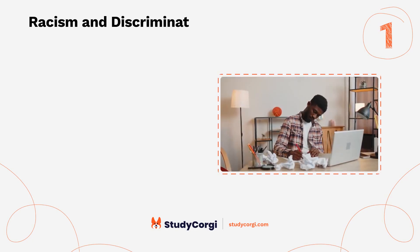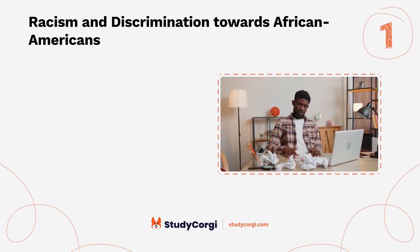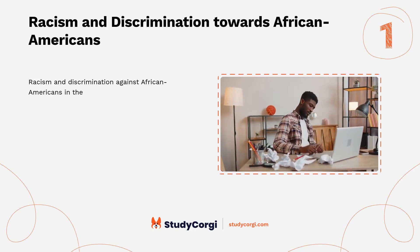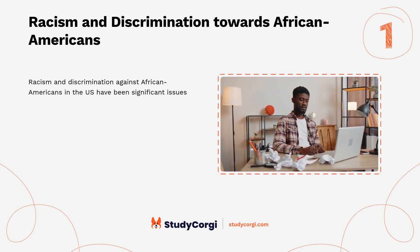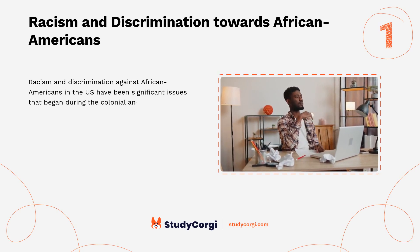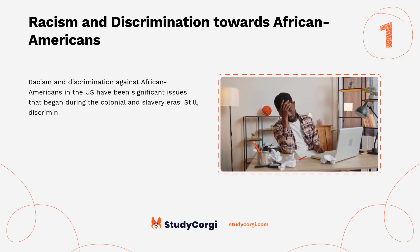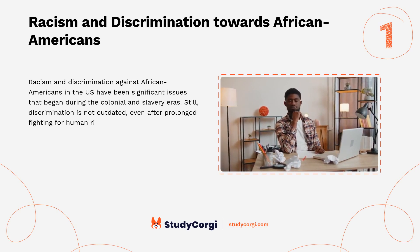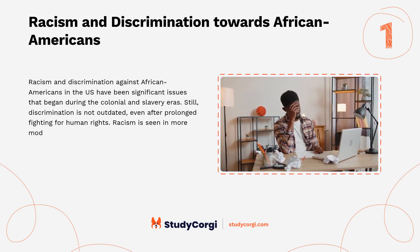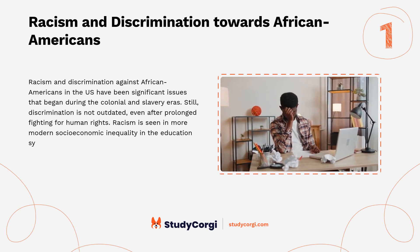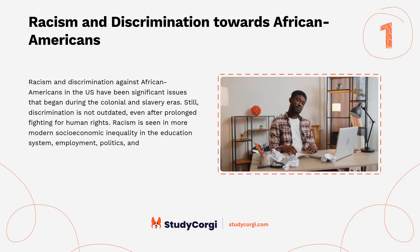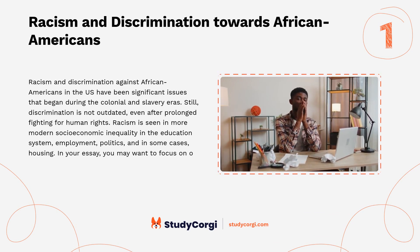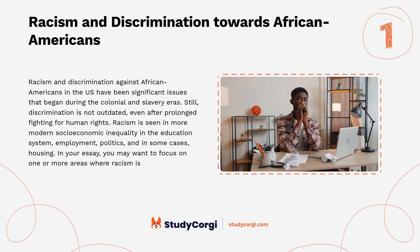Racism and Discrimination Towards African Americans. Racism and discrimination against African Americans in the U.S. have been significant issues that began during the colonial and slavery eras. Still, discrimination is not outdated, even after prolonged fighting for human rights. Racism is seen in more modern socioeconomic inequality in the education system, employment, politics, and in some cases housing. In your essay, you may want to focus on one or more areas where racism is still a problem.